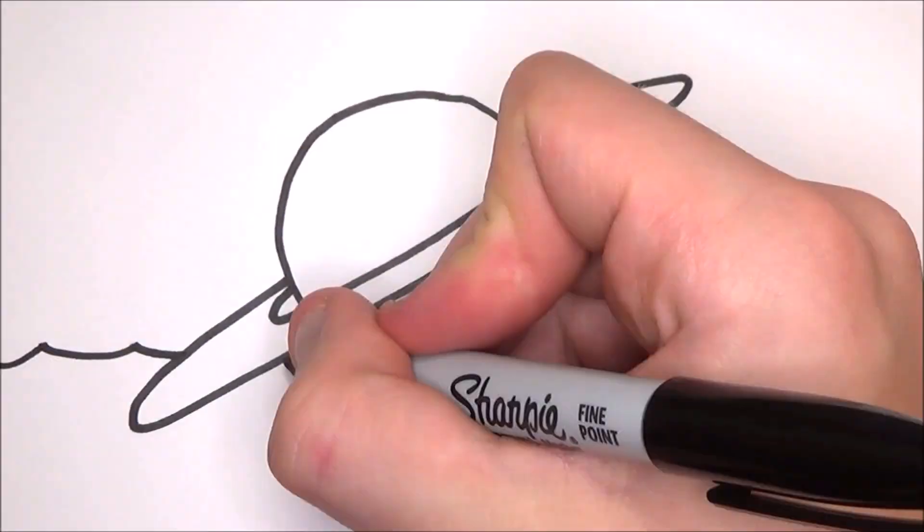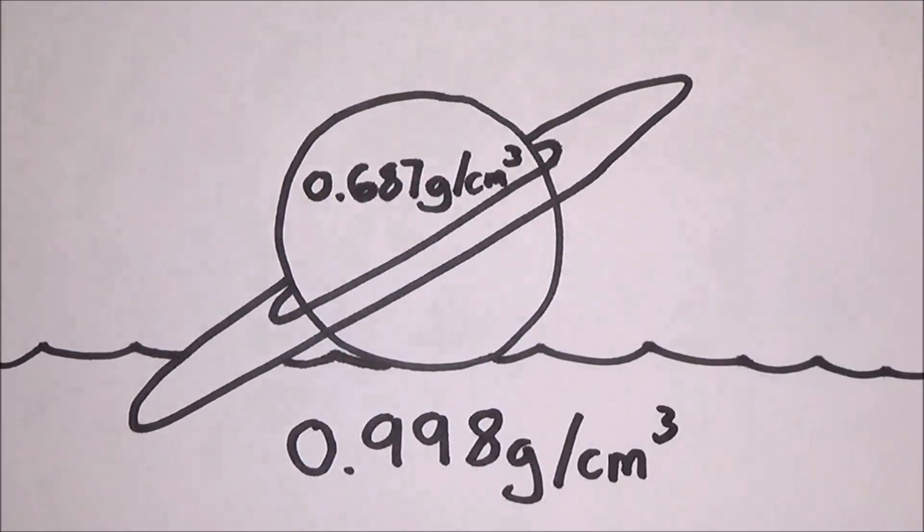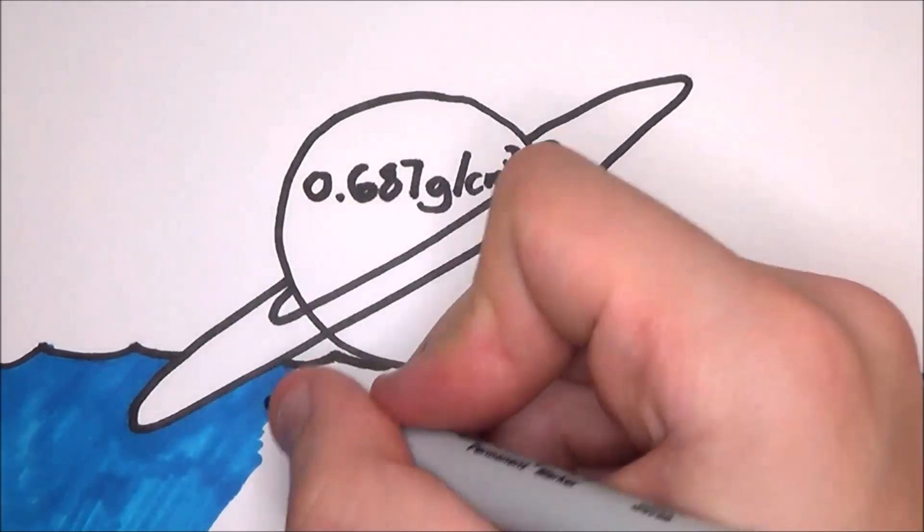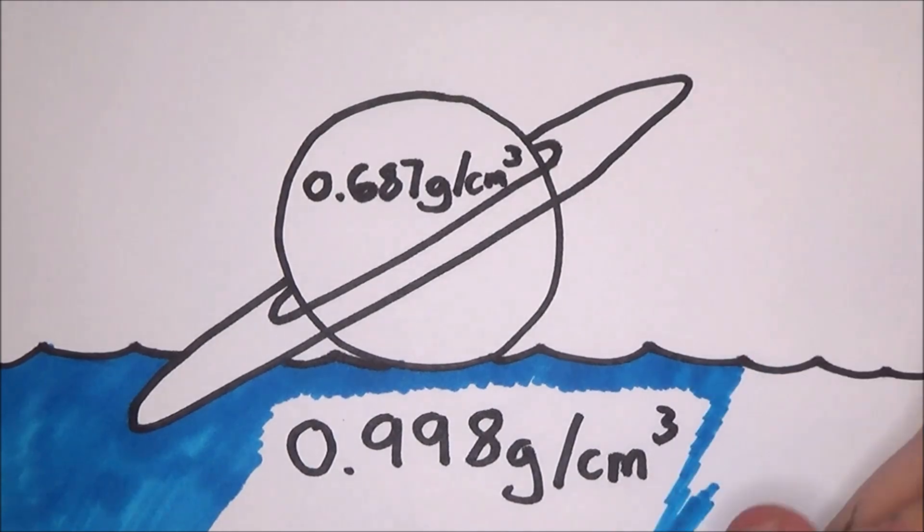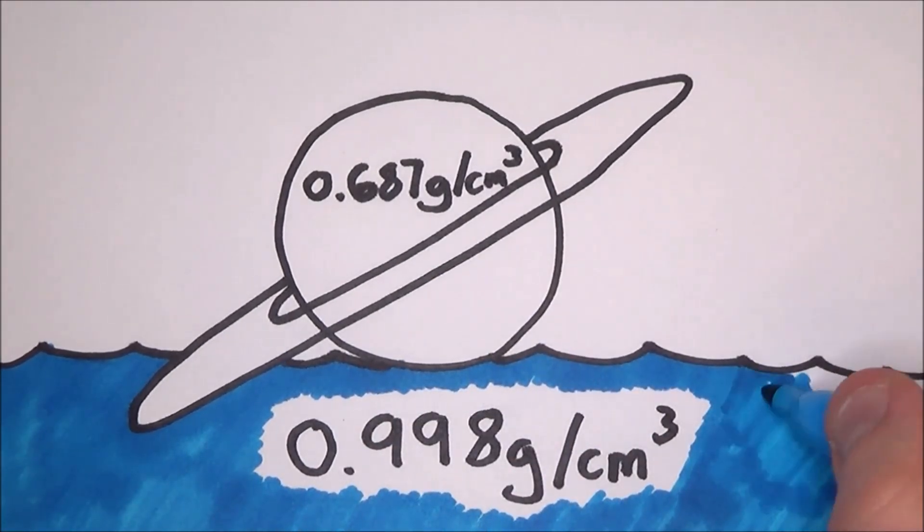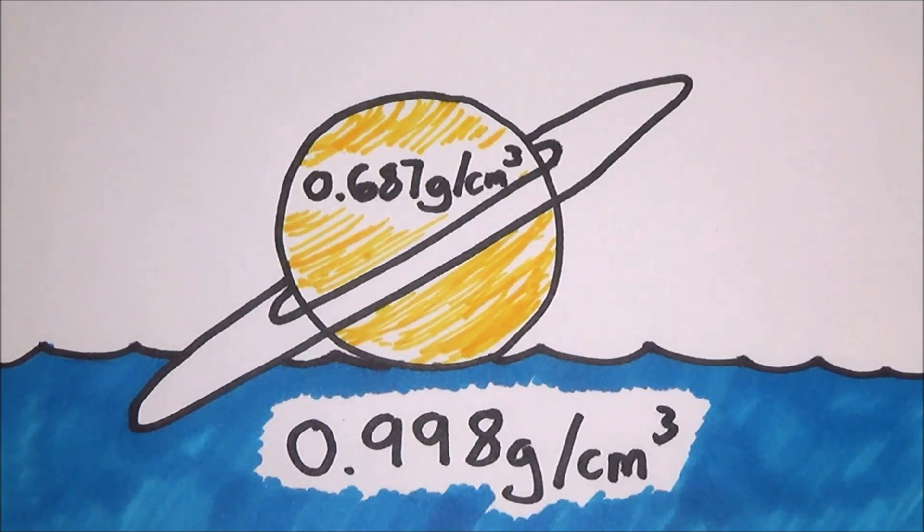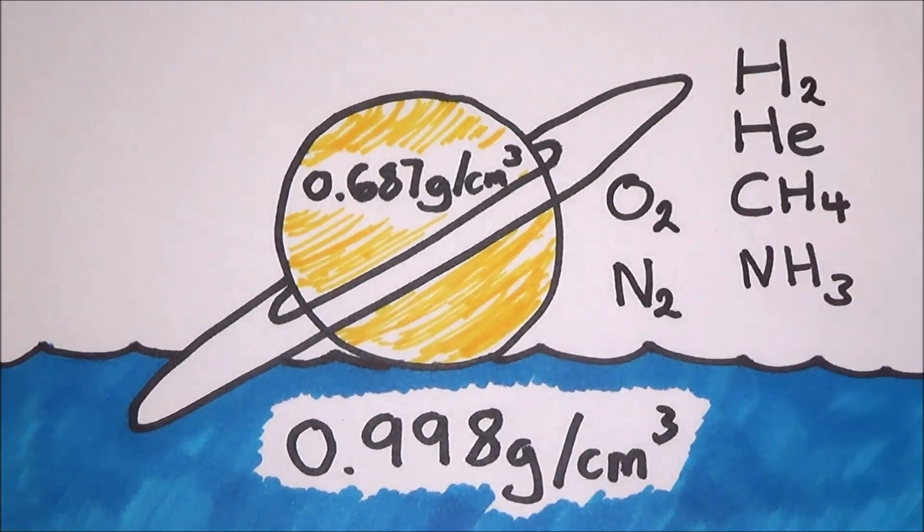The second fact is that if you put Saturn in water, it would actually float. The density of Saturn is about 0.687 grams per centimeter cubed, while water is 0.998 grams per centimeter cubed. This is due to the fact that Saturn's atmosphere is mainly made up of hydrogen and helium, with a few additions of methane, ammonia, nitrogen and oxygen.